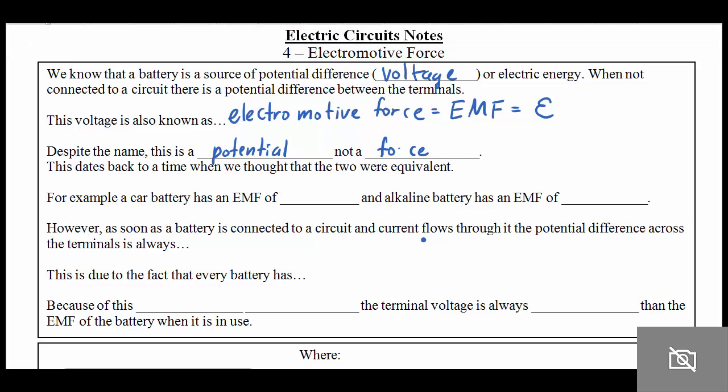So just as an example, if you want to compare the EMFs of different battery types, a car battery has an EMF of about 12 volts, whereas your normal alkaline battery has an EMF of about 1.5 volts.